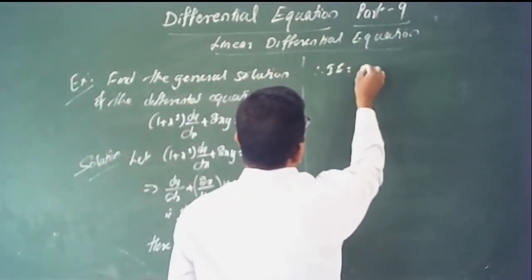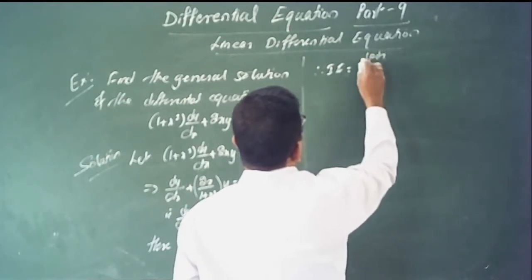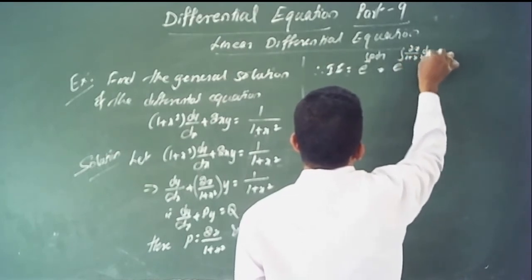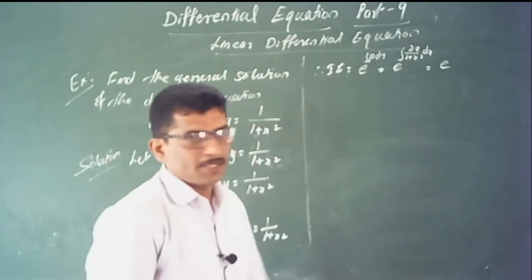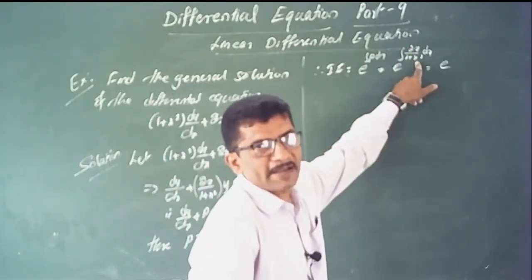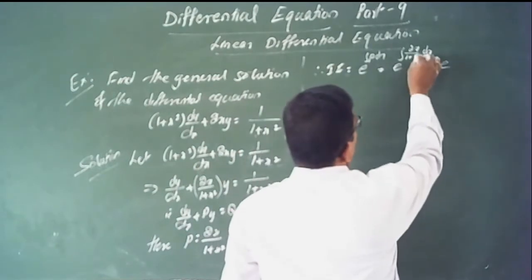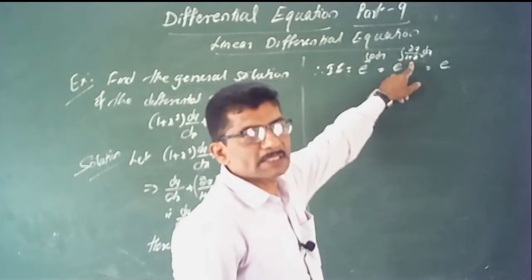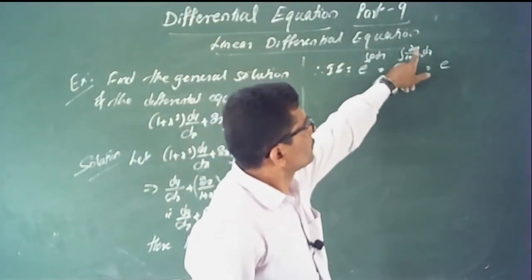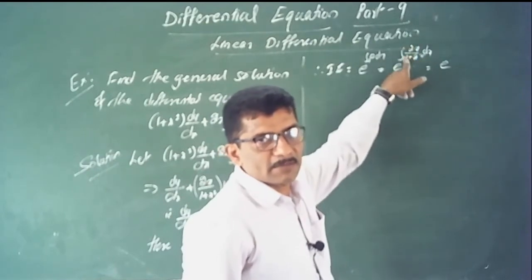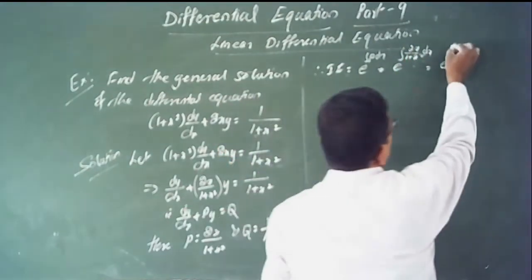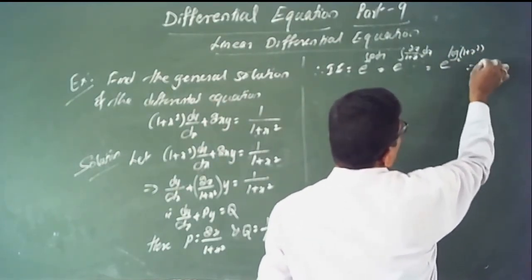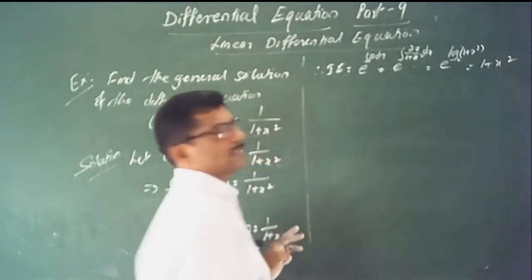Find the integrating factor: e to the power of the integral of p dx equals e to the power of the integral of 2x/(1 plus x squared) dx. Since the derivative of (1 plus x squared) is 2x, this is of the form f'(x)/f(x) dx, so it equals log(1 plus x squared). Therefore the integrating factor is (1 plus x squared).